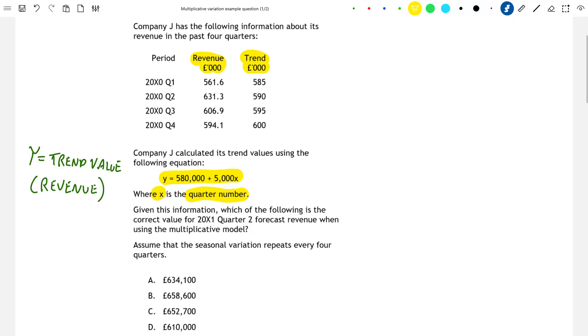So given this information which of the following is the correct value for 20x1 quarter 2 forecast revenue when using the multiplicative model. We're asked to assume that seasonal variation repeats every four quarters.